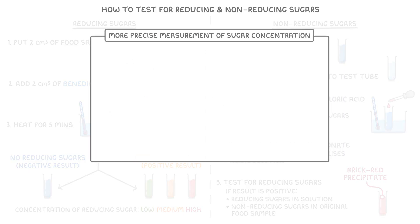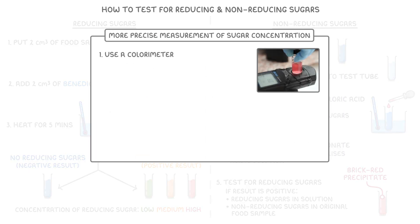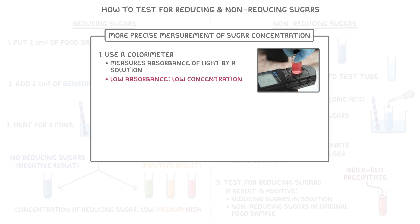For a more precise measurement of sugar concentration, scientists can use a colorimeter, which is a device that measures the absorbance of light by a solution. A low absorbance suggests a low concentration of reducing sugars, whilst a high absorbance suggests a higher concentration.